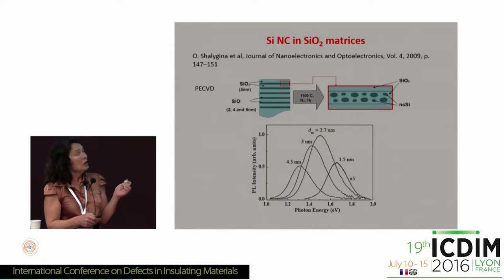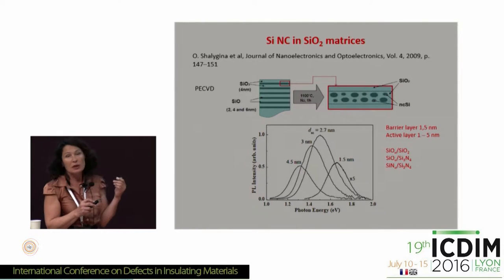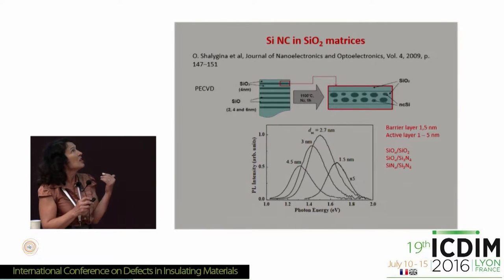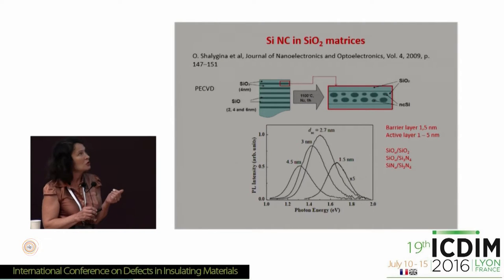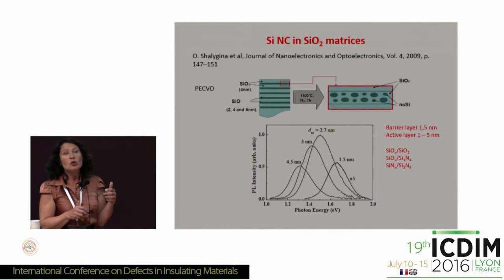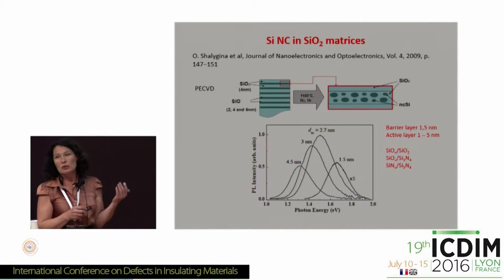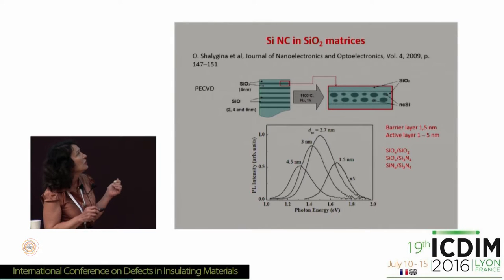After annealing at temperatures above 1100 degrees centigrade, in the layer formed by non-stoichiometric oxide, nanoparticles of silicon are created, surrounded by silicon dioxide in the case of the oxide system. This time we increased the number of matrices: in addition to silica, the layers were silicon oxynitride or nitride. Nitride has a lower band gap, giving higher conductivity in the resultant structure.